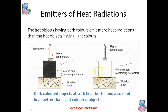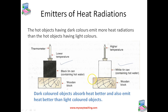On the other hand, the higher temperature of water in the white tin shows that the white tin lost heat slowly — so a white object is a poor emitter of heat and loses heat very slowly. The overall conclusion is that dark colored objects absorb heat better and also emit heat better than light colored objects.